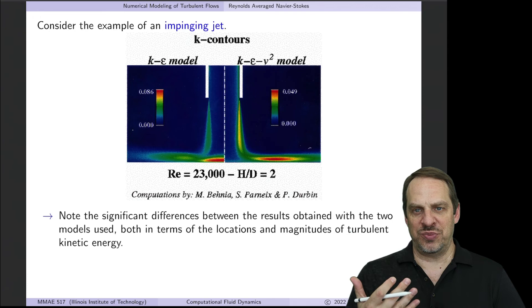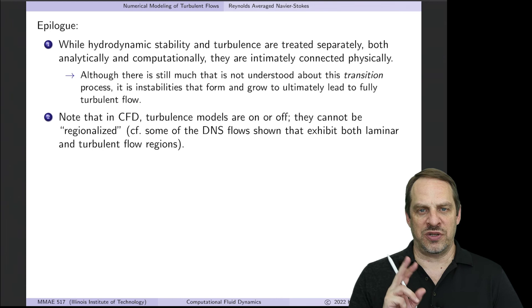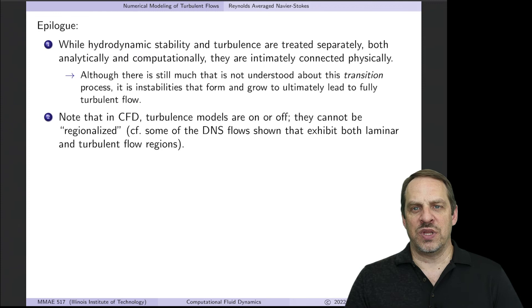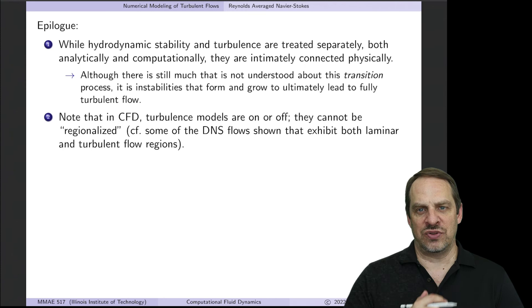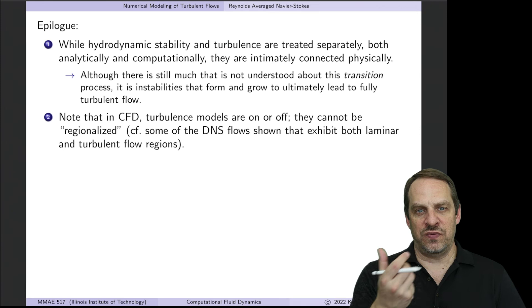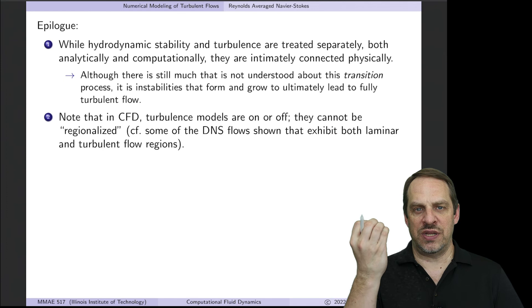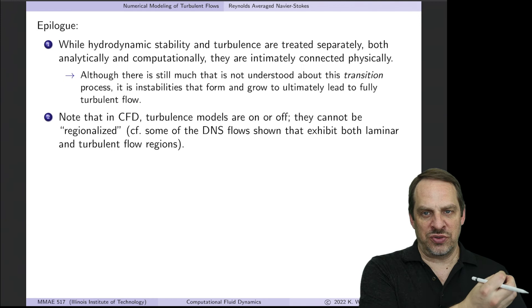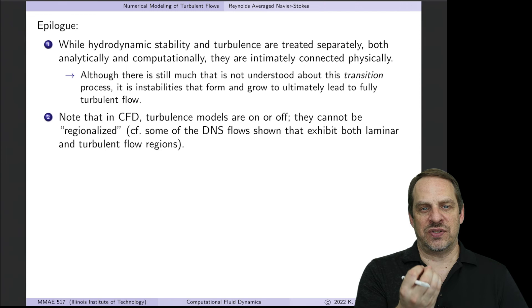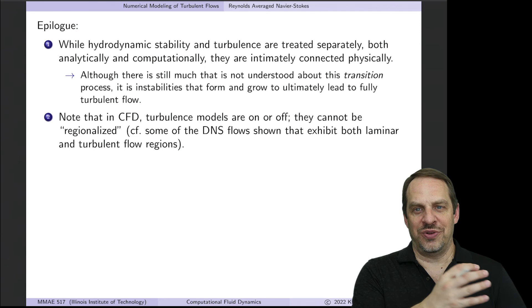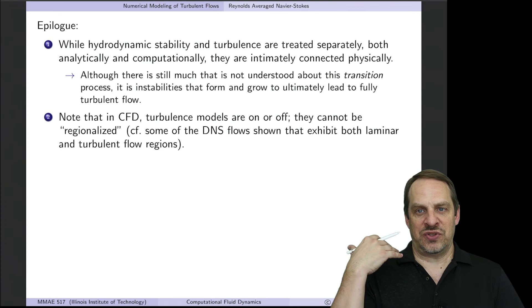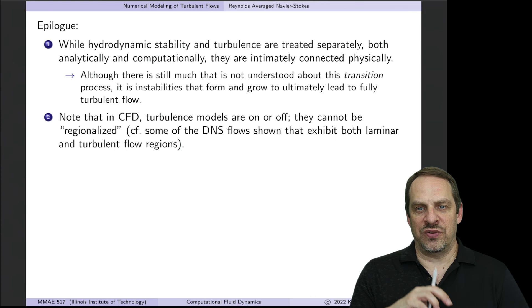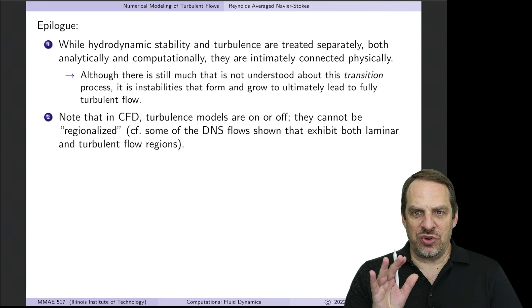I want to finish our discussion of turbulence models with two comments. First, we discussed hydrodynamic stability, and now we're discussing turbulence. These two physical aspects of fluid mechanics are usually discussed separately, often in separate books and courses, because mathematically and computationally they're quite different. But physically, they're intimately connected. It's the instabilities that lead to transition to turbulence that leads to full-blown turbulence. We've discussed stability and turbulence, but not the intermediate pathways, the transition pathways from an instability to full-blown turbulent flow. That's even more complicated. While they're separated often in books and discussions, physically they're very intimately connected. One is leading to the other.